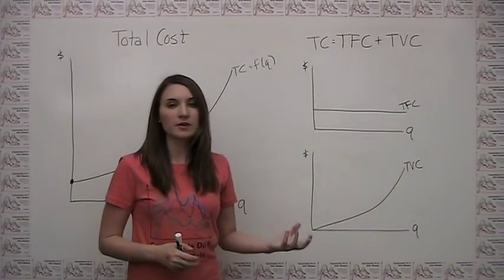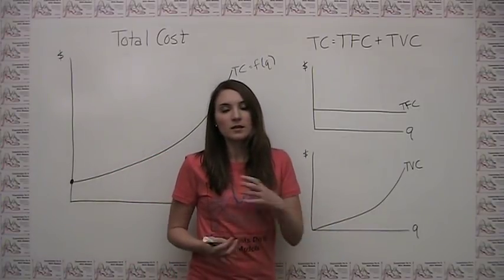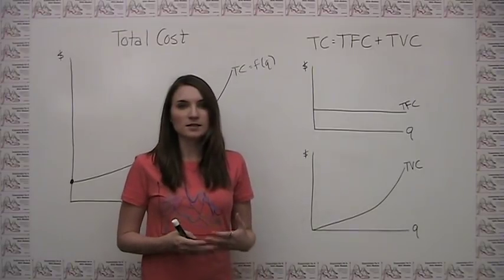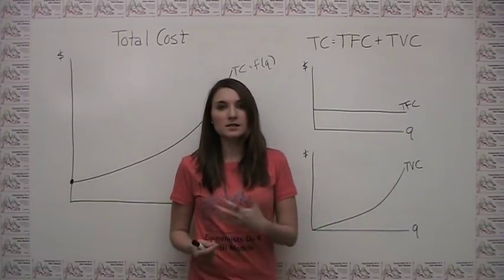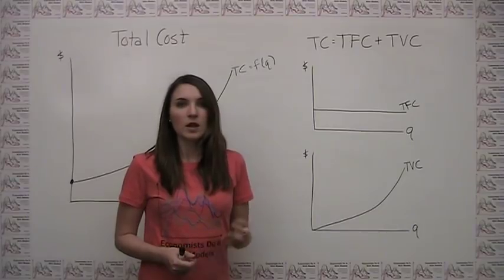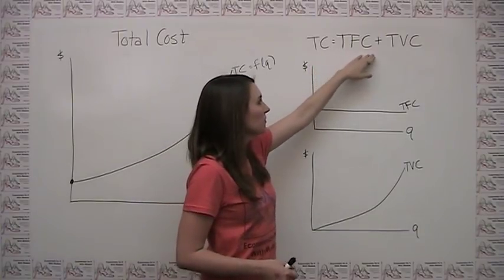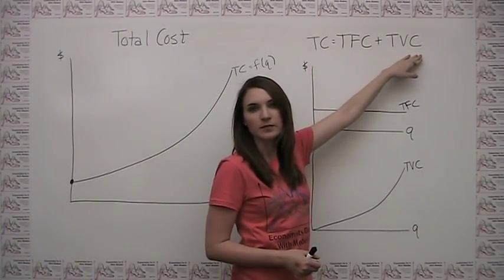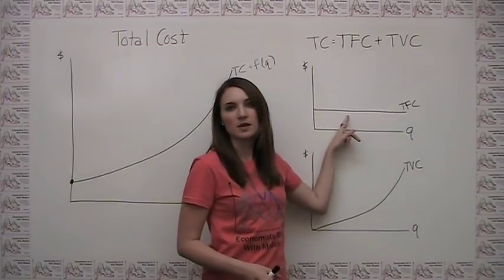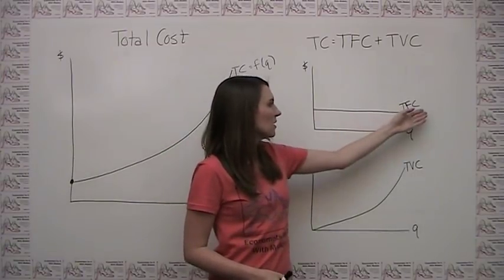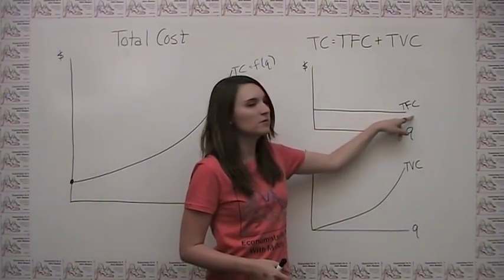We can also think about how to graphically break down total costs into the components of fixed costs and variable costs. Fixed costs are those costs that don't vary with the quantity of output. Variable costs, not surprisingly given the name, are costs that do vary with quantity of output. The relationship is just that total cost equals total fixed costs plus total variable costs. Total fixed costs is just going to be a horizontal line, because it's constant regardless of the quantity produced — the same dollar value regardless of what quantity we're at.